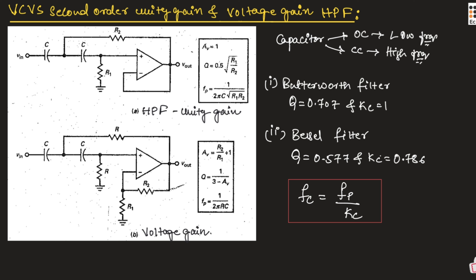This is about VCVS second order unity gain and voltage gain high pass filter. Hope you have understood the topic. Thank you.